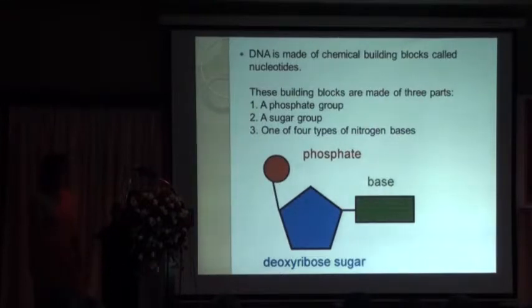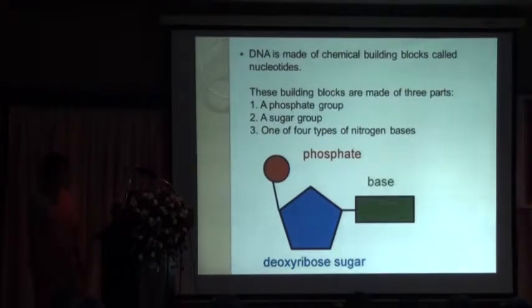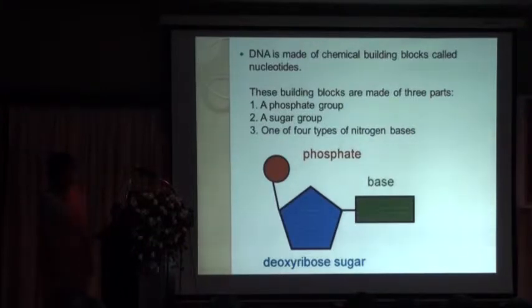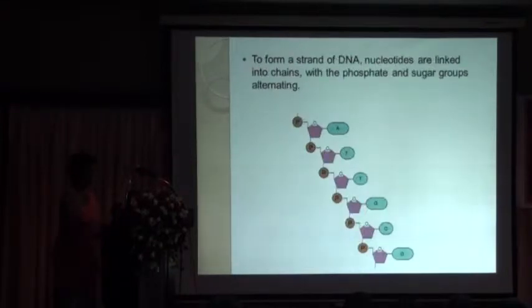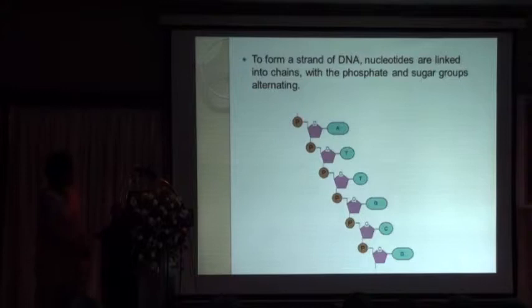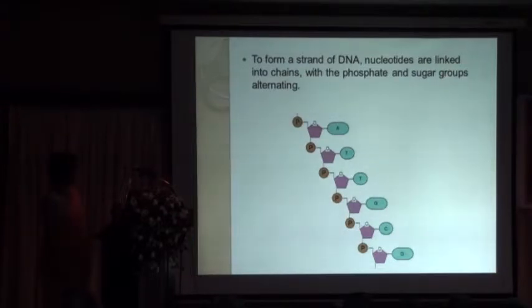When we come to the molecule of DNA, it's made up of chemical building blocks which we call nucleotides. These building blocks are made up of three parts: a phosphate group, a sugar group, and also nitrogen bases.